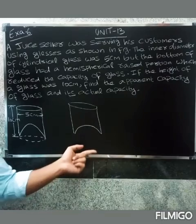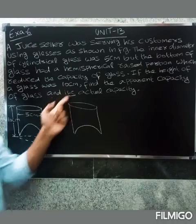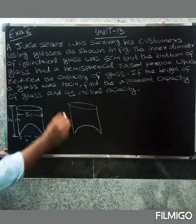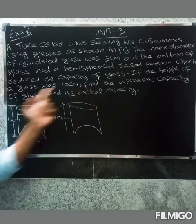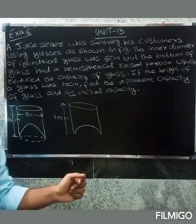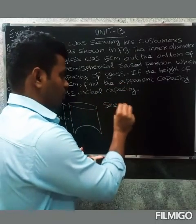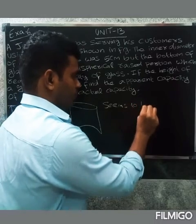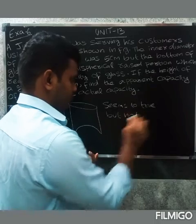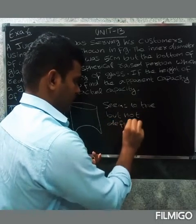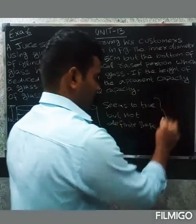If the height of the glass was 10 centimeters, including the hemisphere, find the apparent capacity of glass and actual capacity. Apparent means what seems to be true, but not the definite shape.